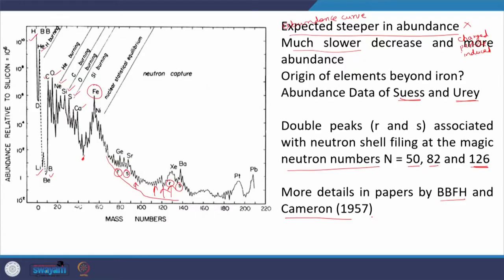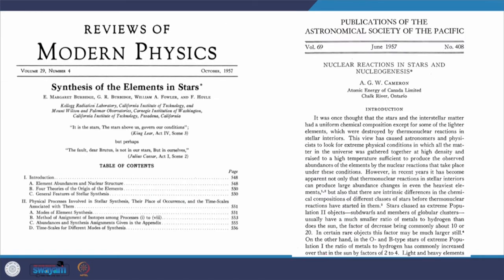Independently, Cameron also explained the abundance curve — not only for the synthesis of elements below iron, but also the synthesis of elements beyond iron. These papers — 'Synthesis of Elements in Stars' published in 1957 — both published independently in the same year, cover the same topic.